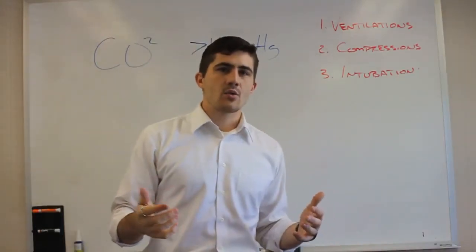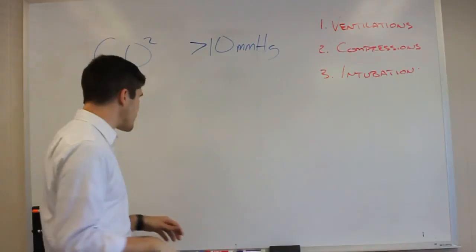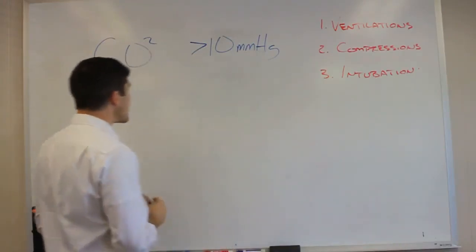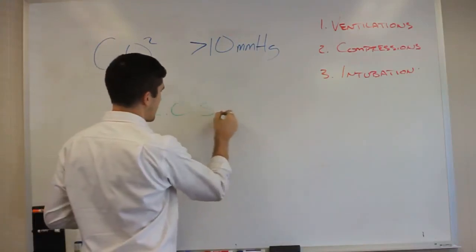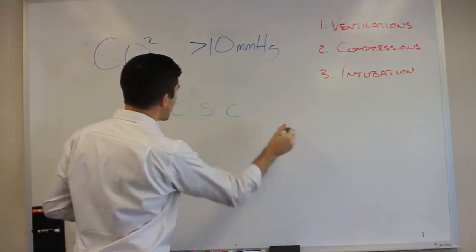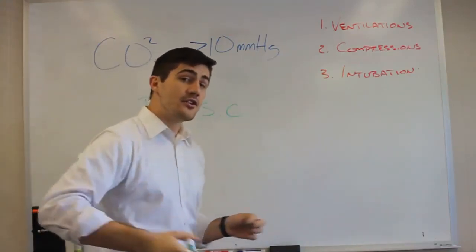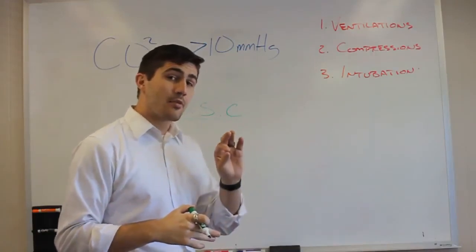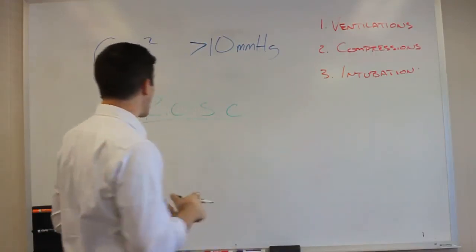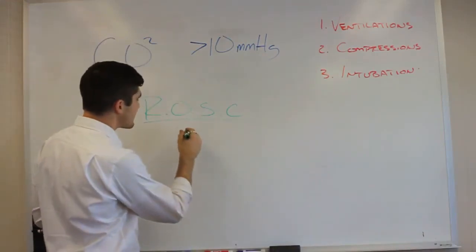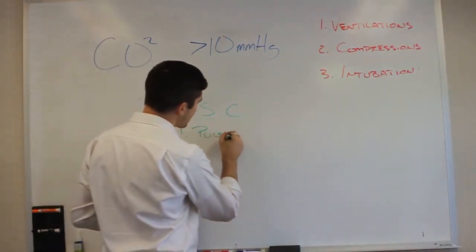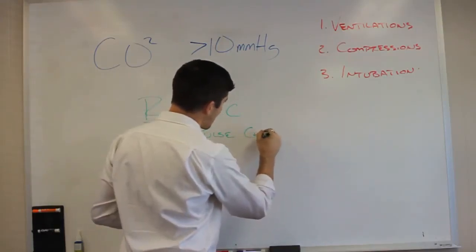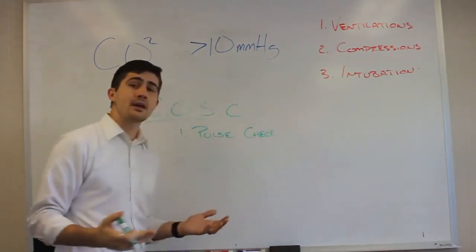Next, we need to talk about ROSC, return of spontaneous circulation. So when we see ROSC, there are two ways to determine whether or not we got a person into spontaneous circulation. And that's, number one, via pulse check. And that's the tried and true method. However,